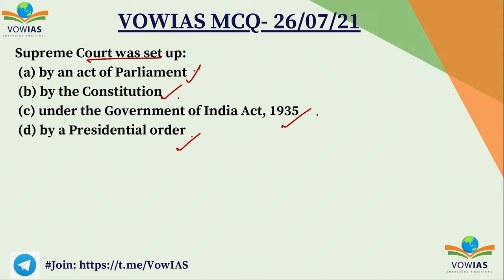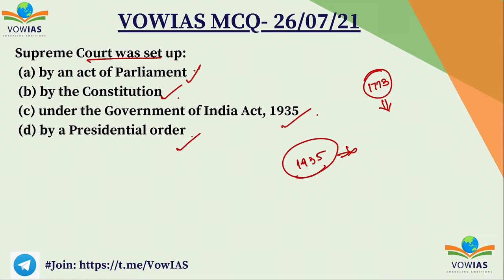The establishment of the court can be dated back to the Indian Council Act of 1773. Various changes were made later in the Council Act of 1784 and beyond. The Supreme Court in its current form was initially mentioned in the Government of India Act of 1935, which became the basis for the formation of the Supreme Court. This court was formed in 1937.